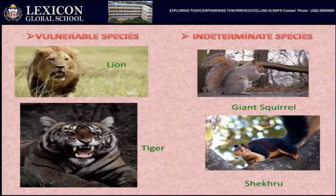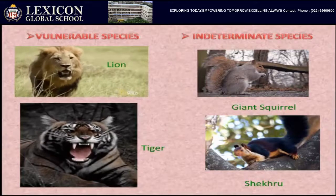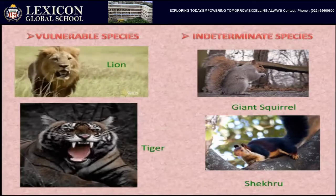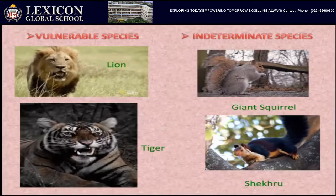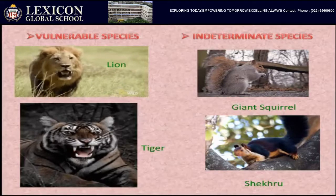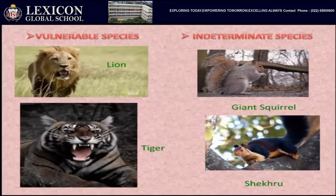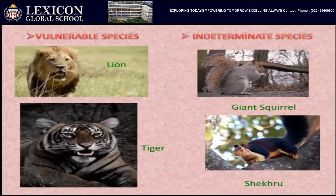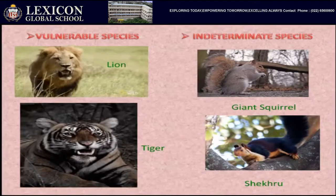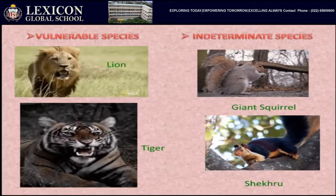An example of an indeterminate species is the giant squirrel, and the state animal of Maharashtra — Shekaru — is also an example of an indeterminate species.